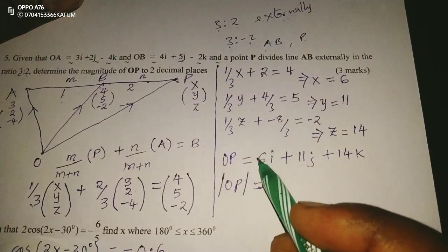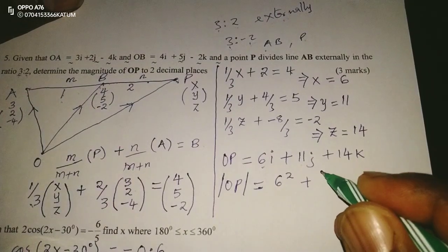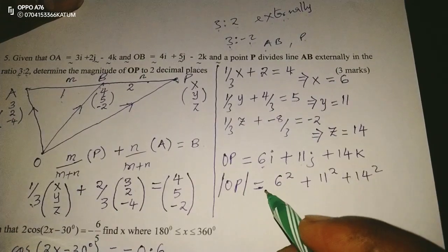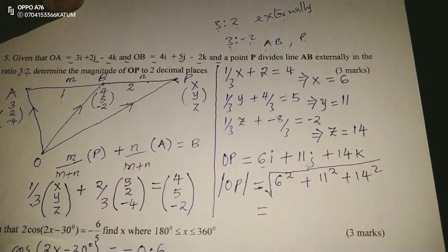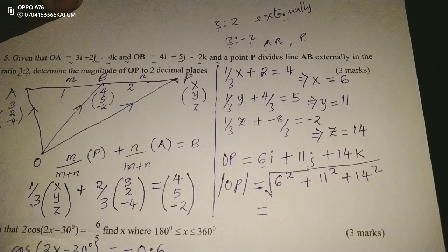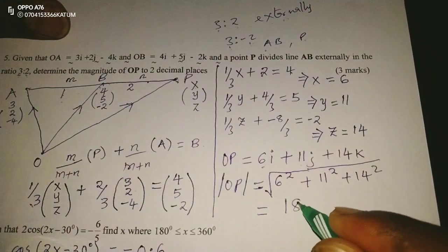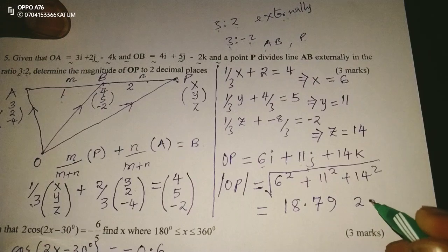So we pick the units here, we ignore the unit vector. So we will take 6 squared plus 11 squared plus 14 squared, then now we obtain the square root. 6 squared plus 11 squared plus 14 squared, then we obtain square root, and remember, it's supposed to be in two decimal places. So it becomes 18.79 units, to two decimal places.